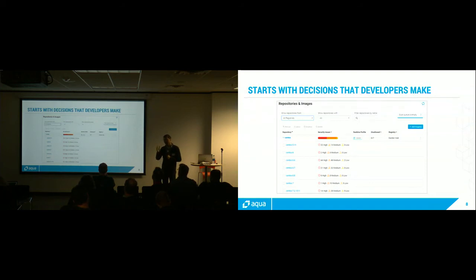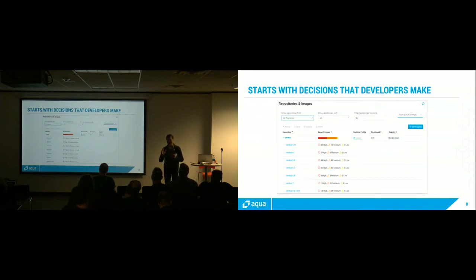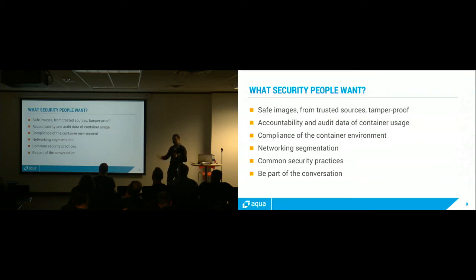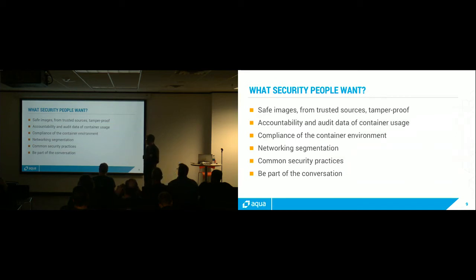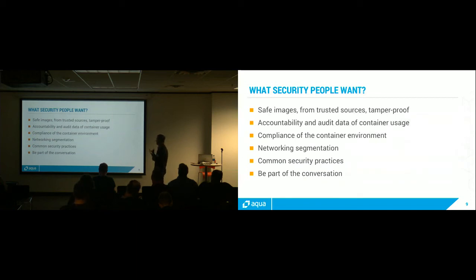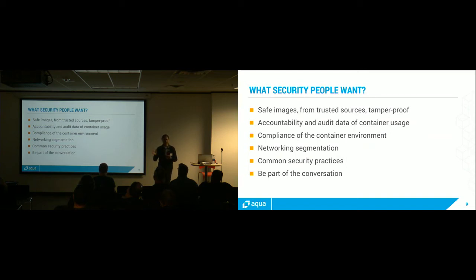All of those are the kinds of things that are just the initial step. What security people want: safe images — they have to be from trusted sources. You don't want to get images from untrusted origins. There's also accountability and all the data of container usage — we need a record of whatever transpired inside the containers. Compliance of the container environment is also important. Most of you are probably familiar with Docker Bench, published by CIS — the Center for Internet Security. At the least, you want to make sure the host environment where you're running containers meets CIS recommendations for how the system should be configured. If the base system is compromised, the containers are going to have problems as well.